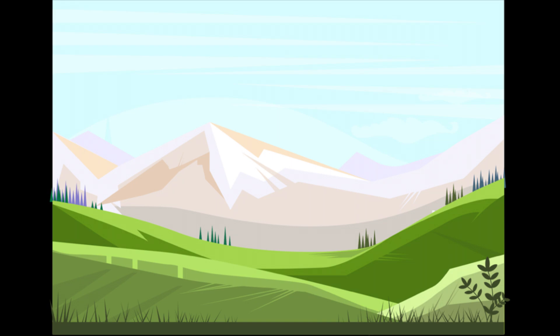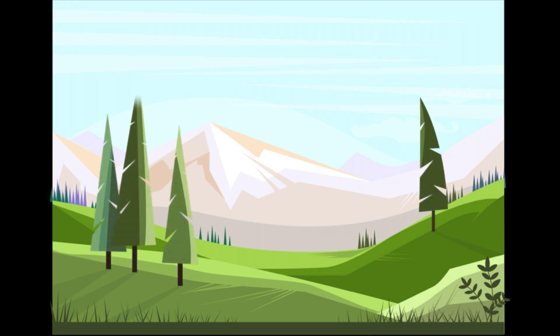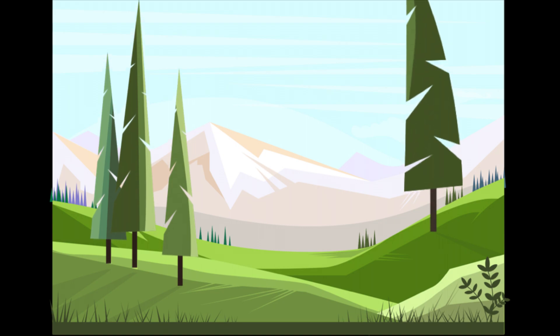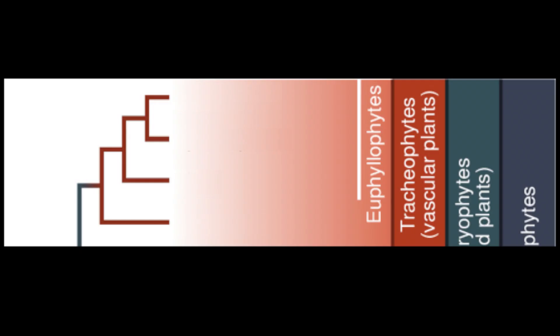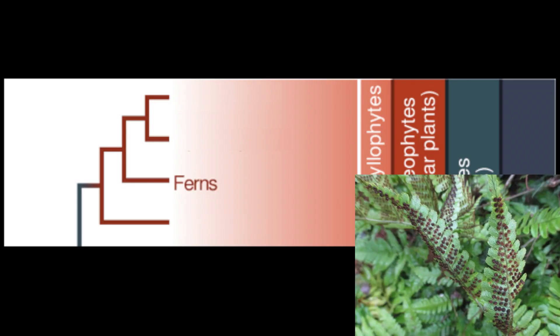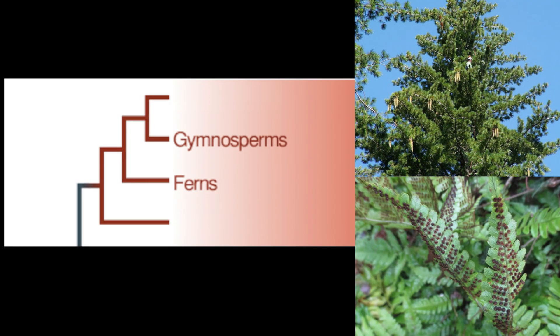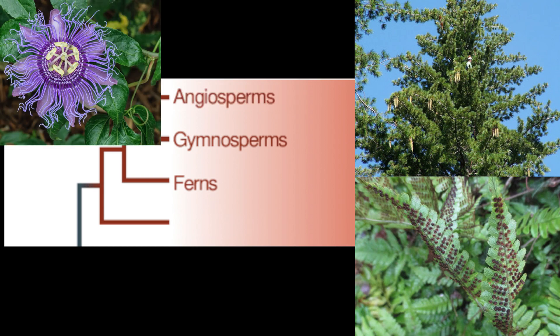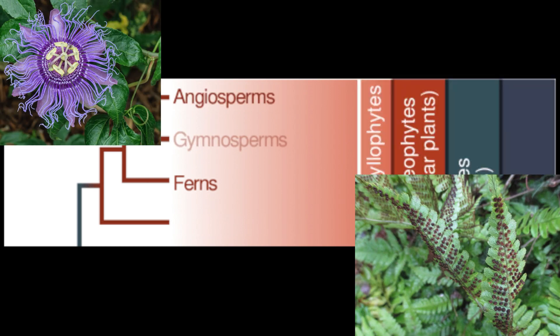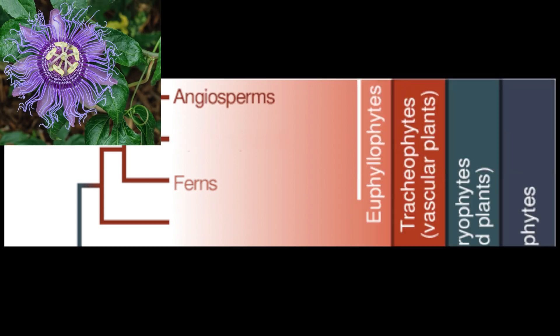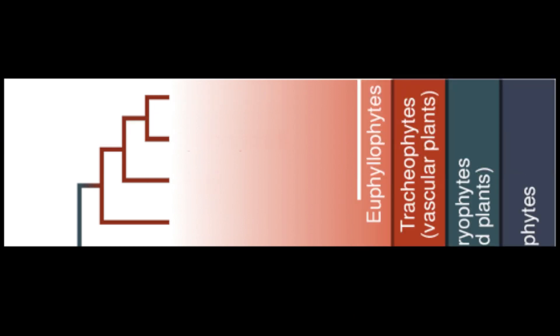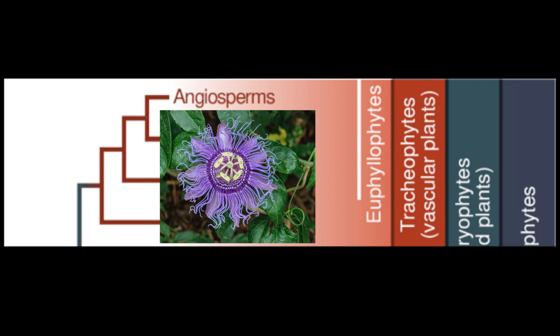Not only can plants grow on land, but they can now grow extremely tall as well. This group consists of all of the other plants — ferns, gymnosperms, angiosperms. And of these subdivisions, or subgroups, the angiosperms are the major players.